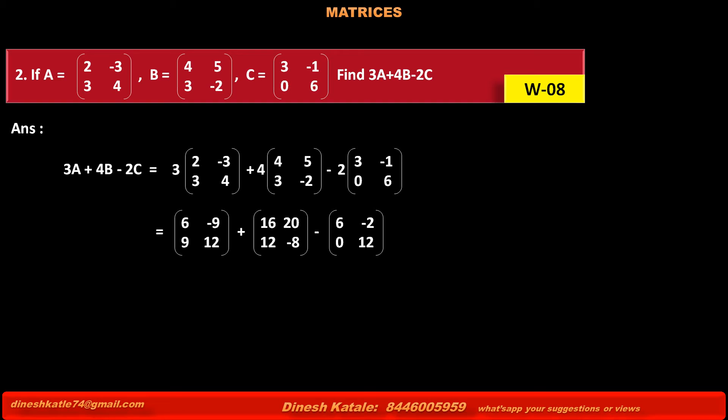Adding corresponding elements of matrices, we get 6+16-6 is 16, -9+20-(-2) is 13, 9+12-0 is 21, 12+(-8)-12 is -8.